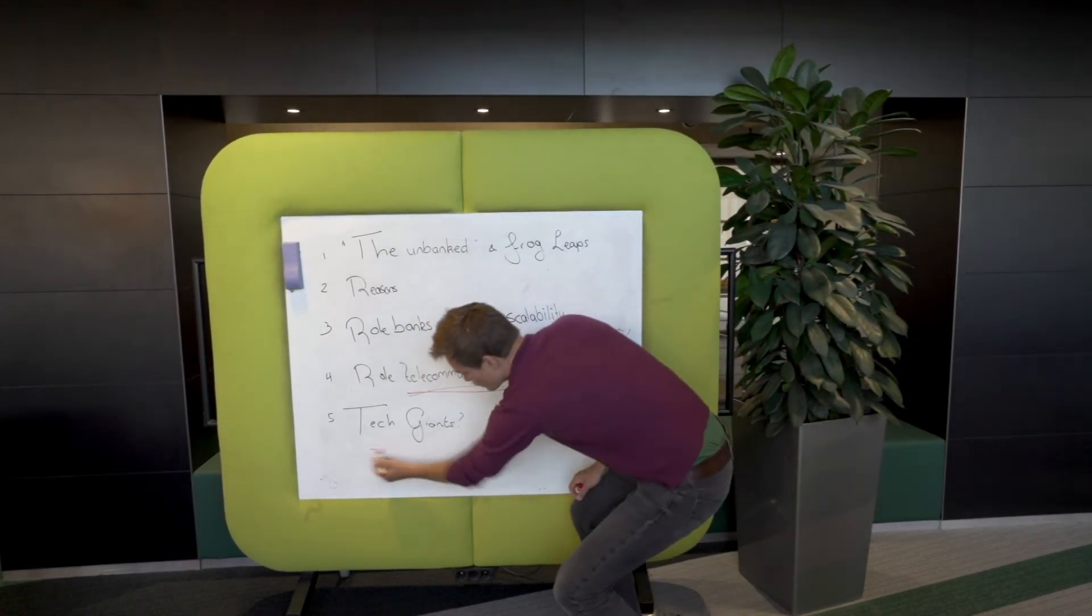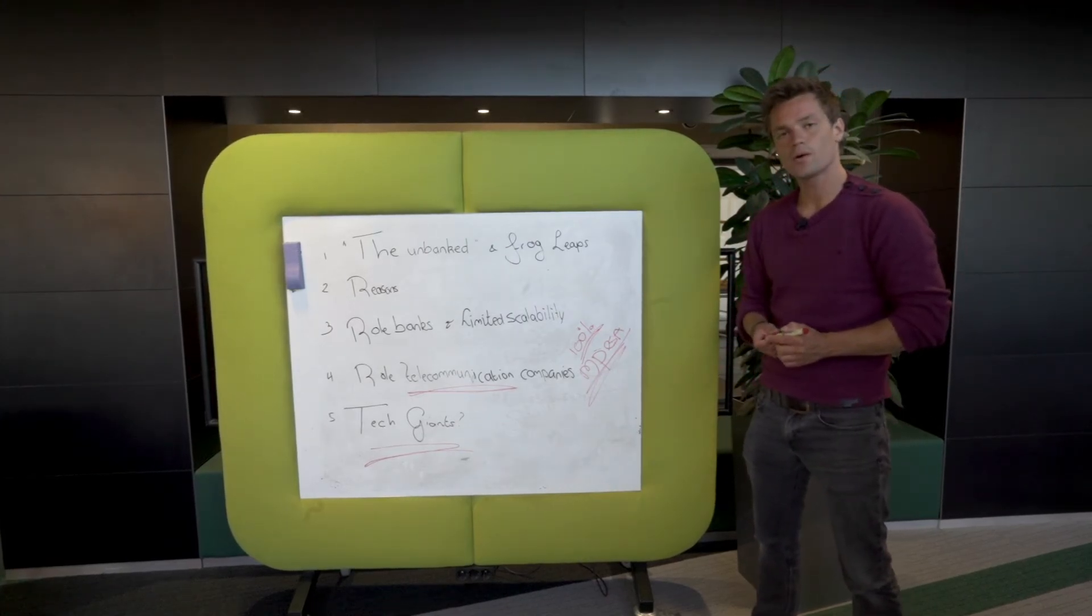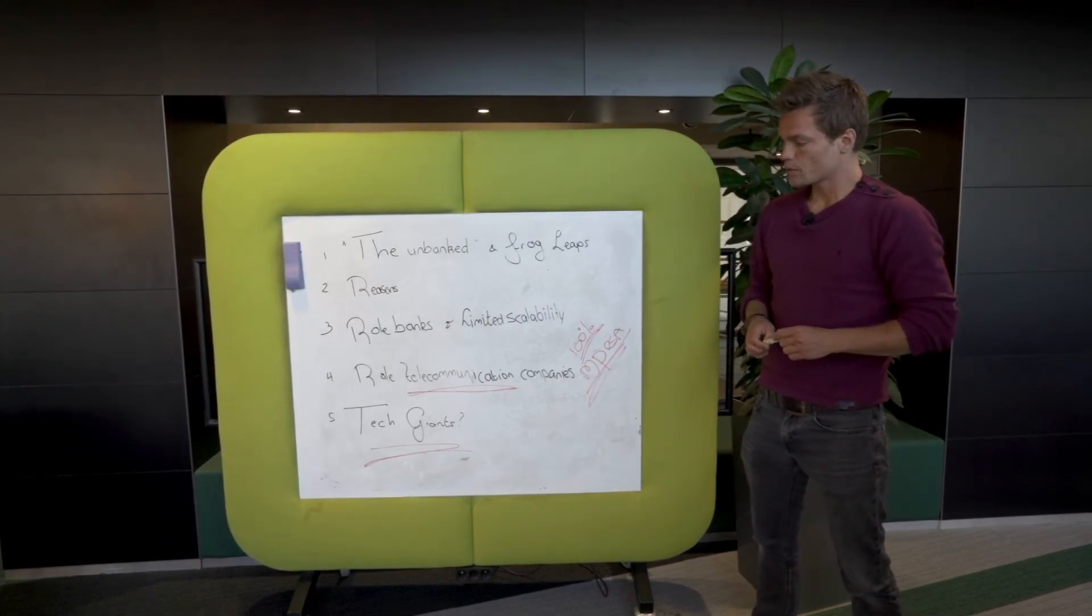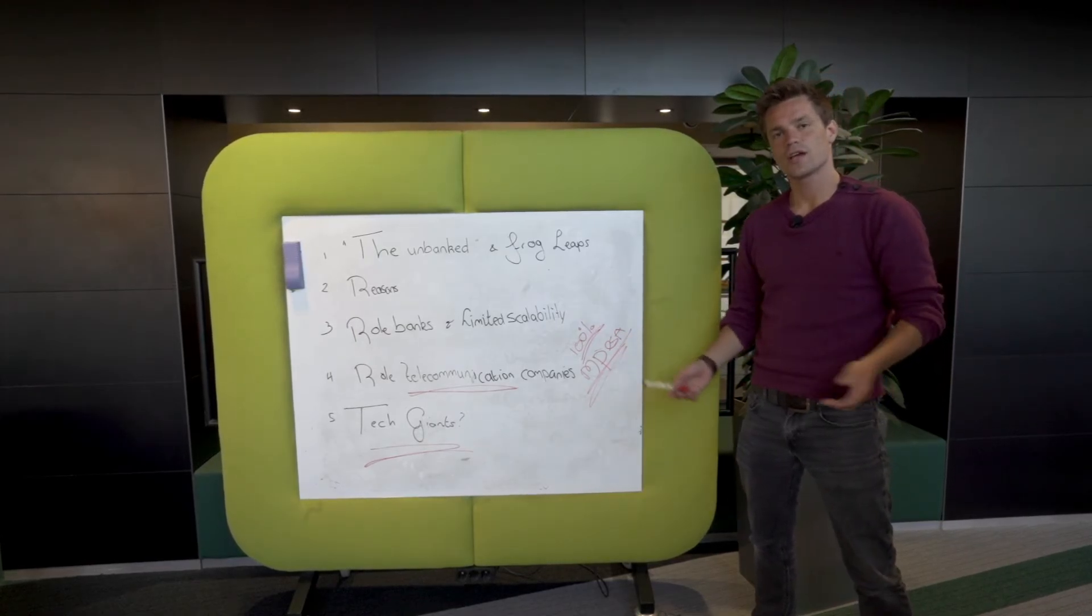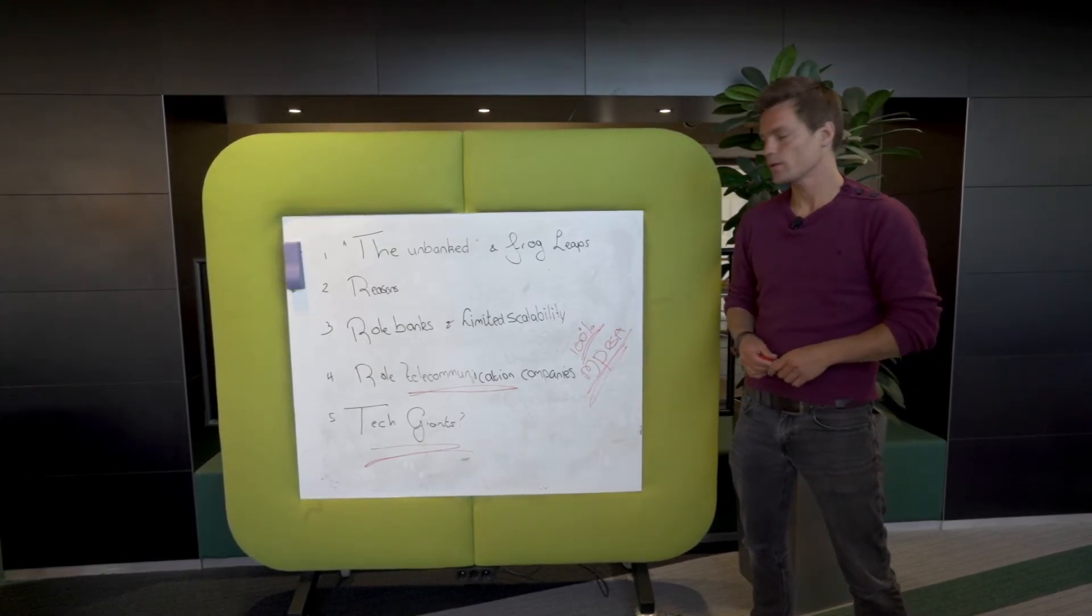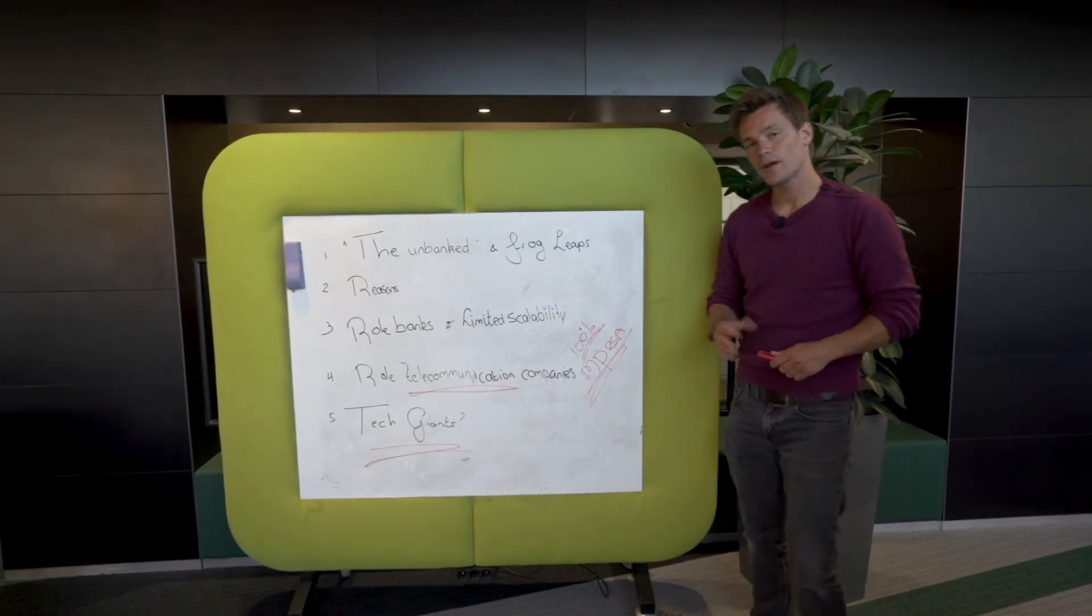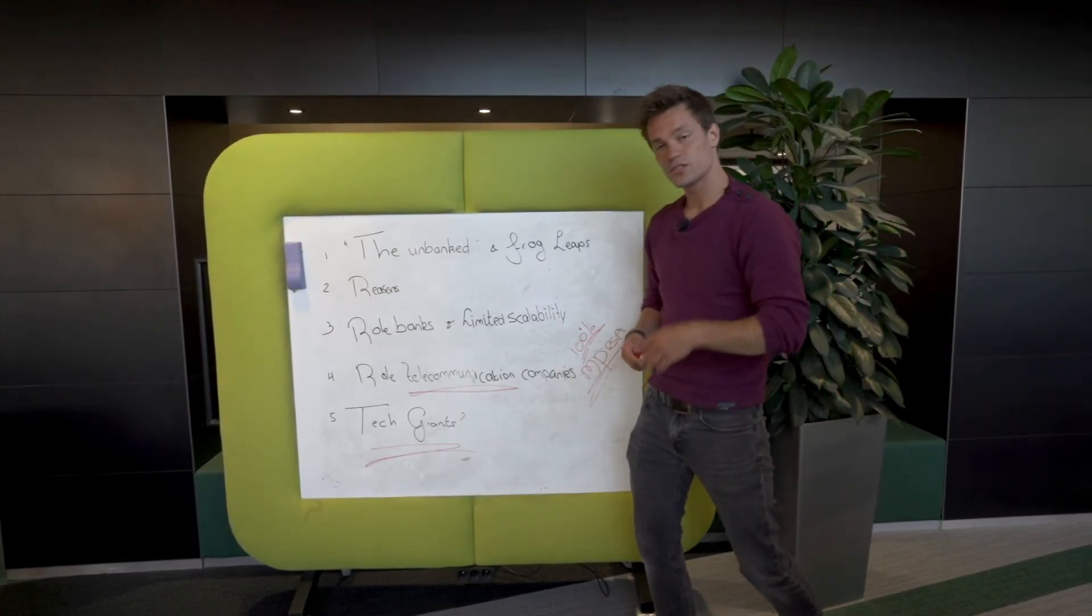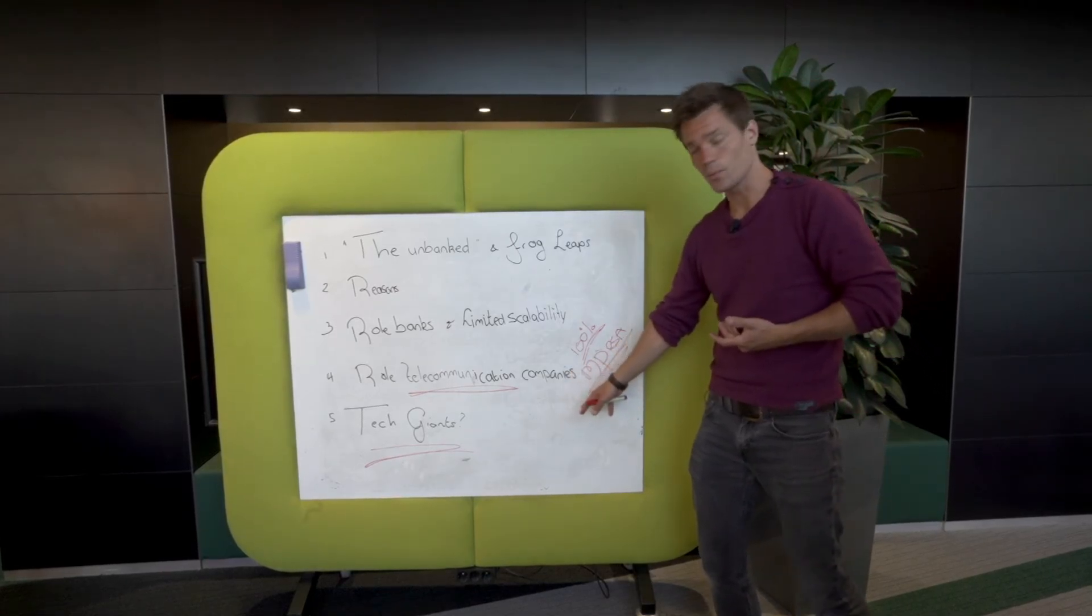Other than that we also have the tech giants jumping in. For example think about Facebook and its Libra coin. Currently the internet hasn't spread across every corner of the world. So not fully 100% coverage for the internet yet. But if we have internet you could do either centralized or decentralized solutions. Because you can't send a bitcoin to somebody who doesn't have internet on the other side of the world.